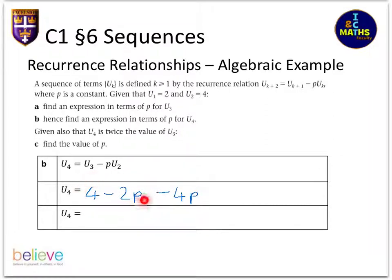So this four minus two p, that's what I got for u3, and u2 is equal to four, so that's where that four comes from and four times p. I'm taking it away, and that means my expression for u4 is four minus six p.